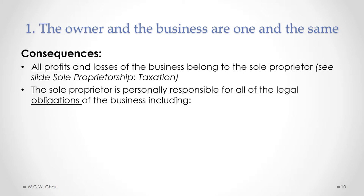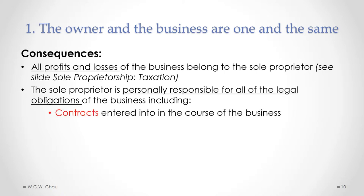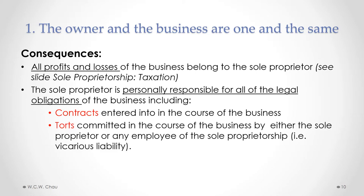Another consequence flowing from the concept that the owner and the business are one and the same is that the sole proprietor is personally responsible for all of the legal obligations of the business — including all contracts entered into in the course of the business, and any torts committed in the course of the business by either the sole proprietor or any employee. This includes vicarious liability, where an employer can be vicariously liable for torts committed by an employee in the course of their employment. Tax liabilities also apply: if the business owes tax, the sole proprietor is personally responsible for that tax.